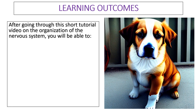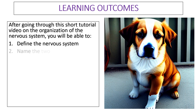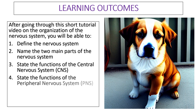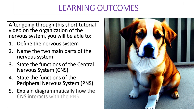After going through this short tutorial video on the organization of the nervous system, you'll be able to define the nervous system. You'll also be able to name the two main parts of the nervous system, and state the functions of the central nervous system as well as the functions of the peripheral nervous system.